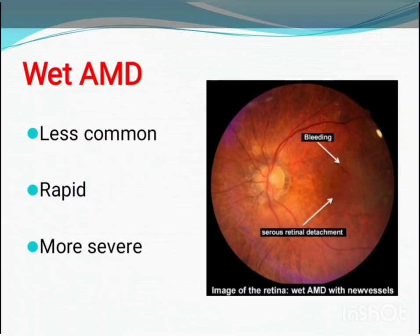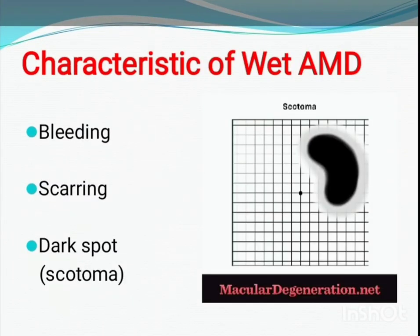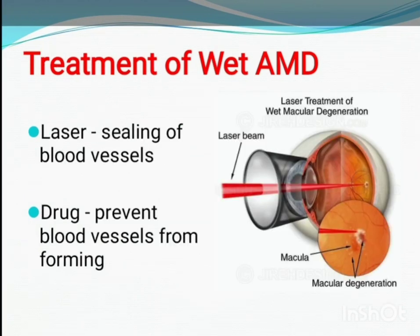Wet AMD, the advanced form, is less common, accounting for only about 10 percent of cases, but it is more damaging and can develop rapidly, causing severe vision loss. Wet AMD involves the development of new blood vessels at the back of the eye that can rupture or bleed. This bleeding is usually accompanied by vision loss. The blood vessels leave a scar, which can cause you to see a dark spot in the center of your vision called a scotoma. During an eye exam, pictures can be taken of these blood vessels.